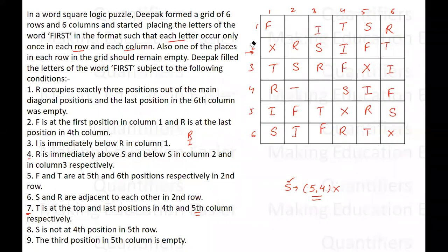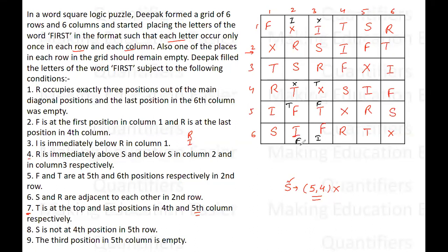Two possibilities for columns 2 and 3 are drawn. Possibility one: empty is in row 1 of column 2 with I placed below it, and corresponding arrangement in column 3 with T and F. Possibility two: I is in row 1 of column 2, empty is shifted, and T, F, and I rearrange accordingly. Both are valid letter placements.